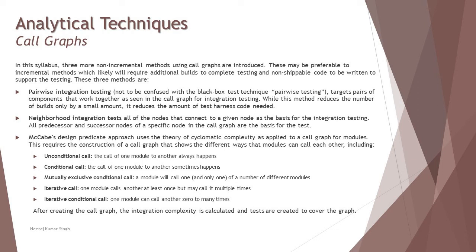Neighborhood integration test. All of the nodes that connect to a given node as the basis for the integration testing. That means here probably a module A exists, and there are a lot of other modules which are connected directly to A, for example B, C, D, E. And now B can reach to A, C can reach to A, D can reach to A, E can reach to A, and E can also reach to all these modules. So that's where we call it as neighborhood integration test, where a particular module is integrated to several other modules directly, and you have to make sure that everything meets the expectation.